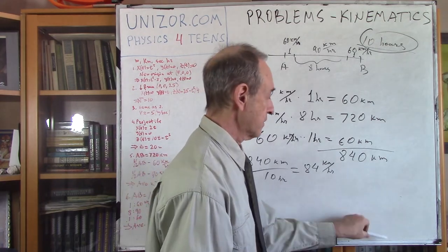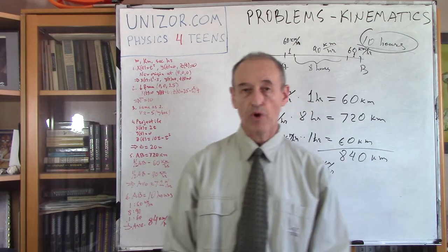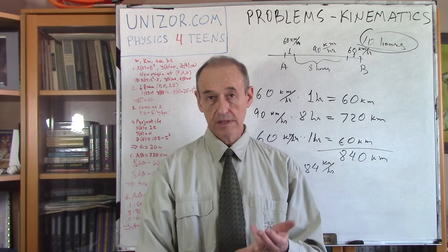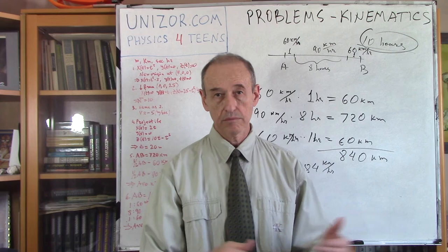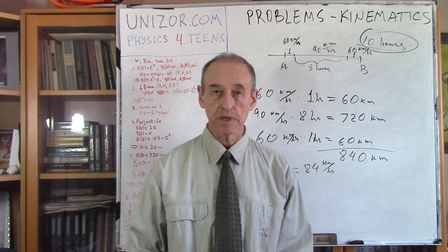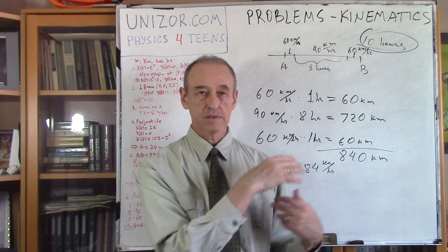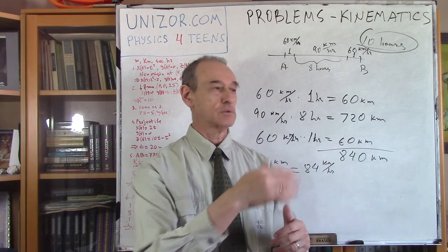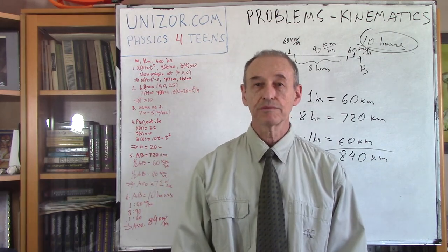That's it for today. These are six different, very easy problems which require nothing except the concepts of distance, time, and average speed — which is distance divided by time. In some cases I used derivatives to find instantaneous speed, but only in those cases where a formula for the movement was given, like x(t) = t² divided by whatever. Thank you very much, and good luck.